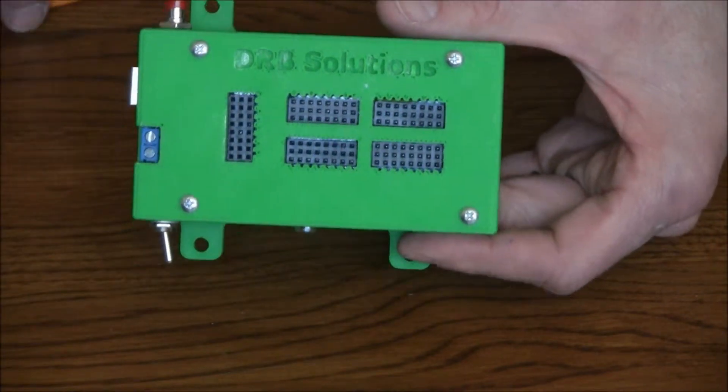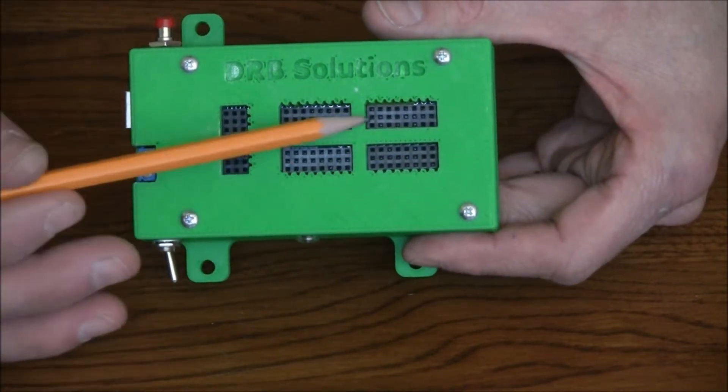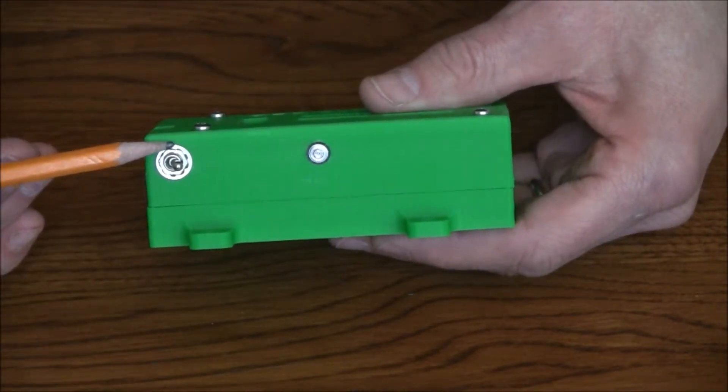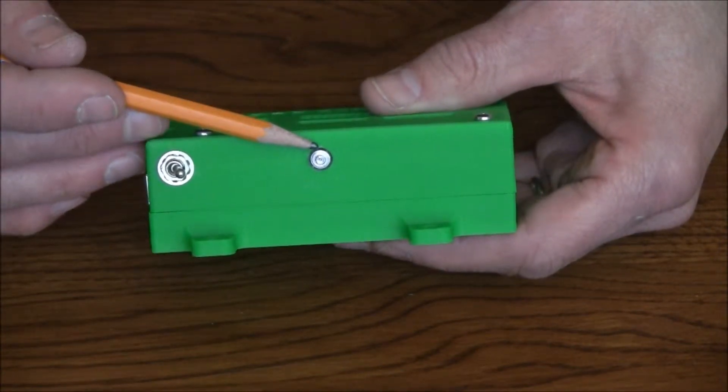So you can see through these openings I've got my different connectors. On this side I have my motor power switch and an indicator LED.